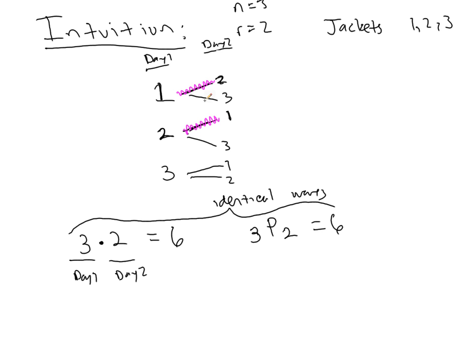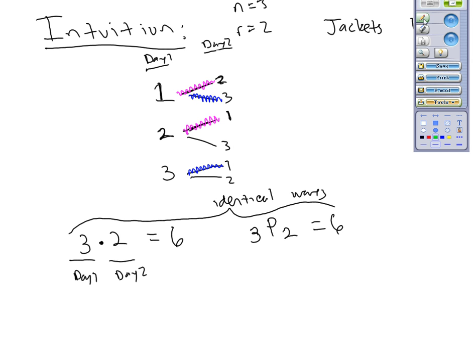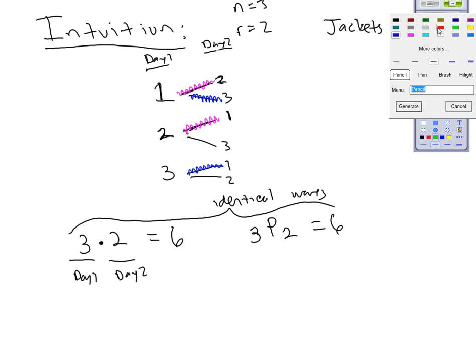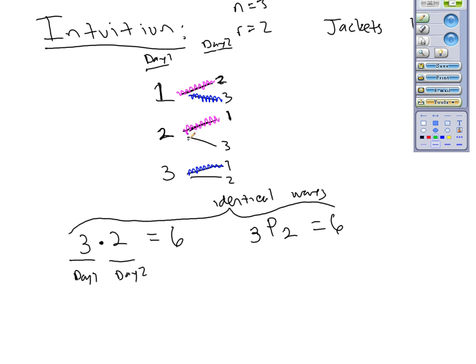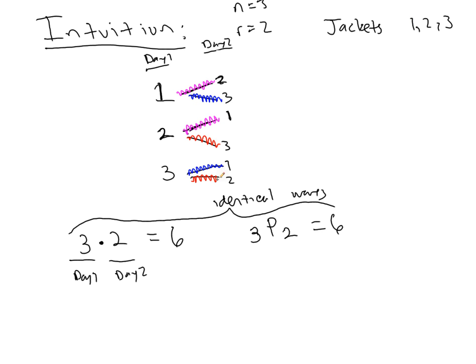Let's say now, 1, 3. Well, for 1, 3, I've also got 3, 1. Further, for 2, 3, I've got 3, 2.